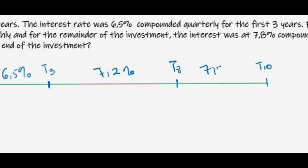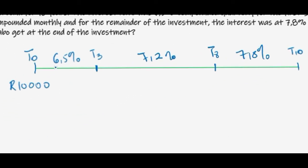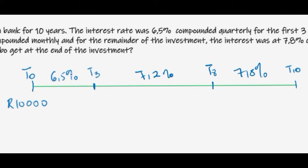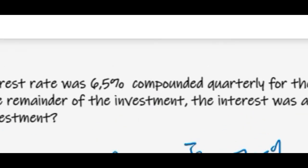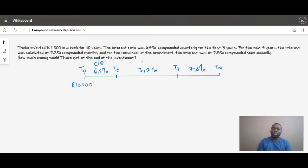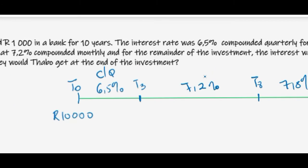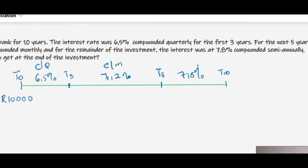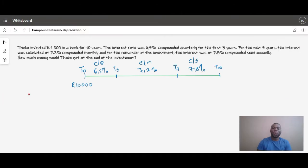Finally, for the remainder of the investment, the interest rate was 7.8%, which covers t8 to t10. The 6.5% was compounded quarterly, the 7.2% was compounded monthly, and the 7.8% was compounded semi-annually. With all this on our timeline, we can now answer the question using the compound interest formula.